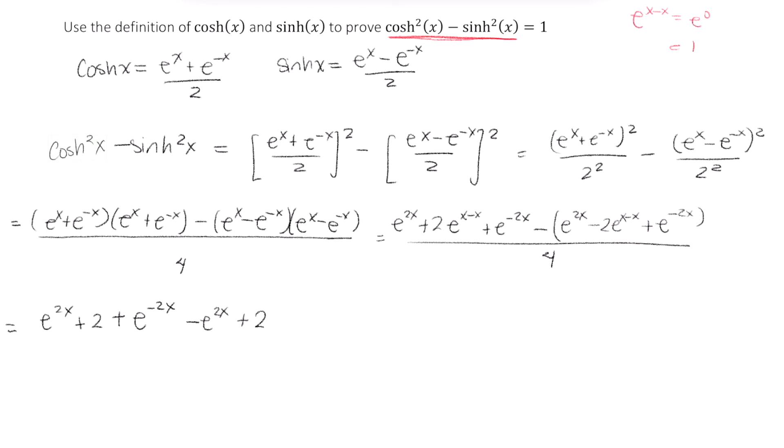And then finally, we have this negative times this last term, which gives us a negative e to the negative 2x. And this entire thing is divided by 4.